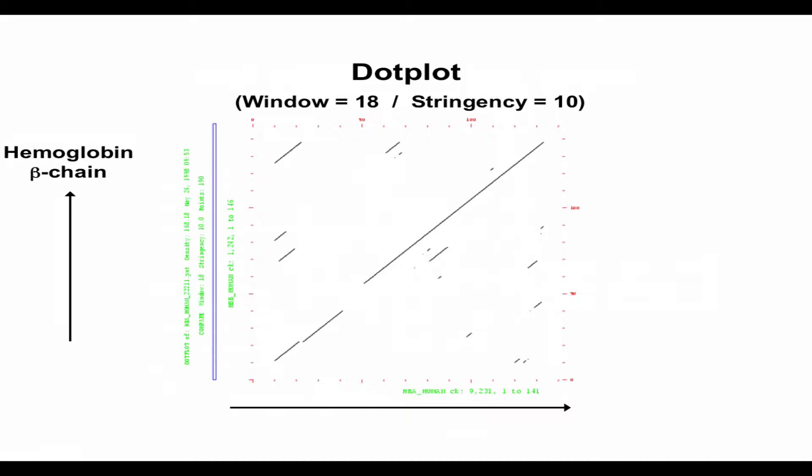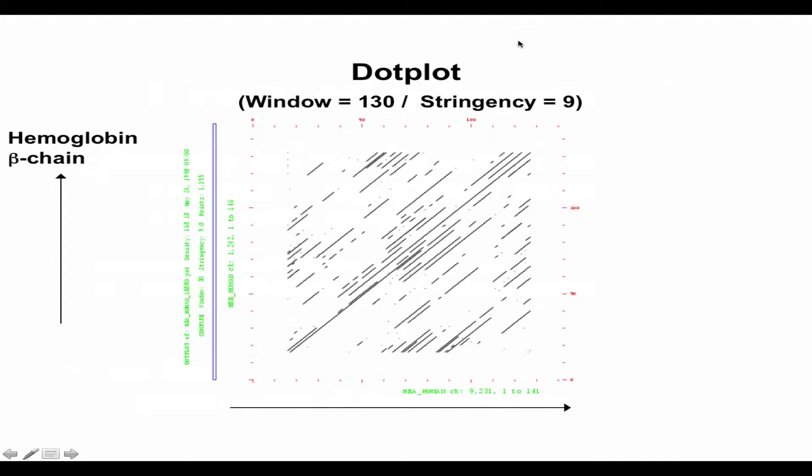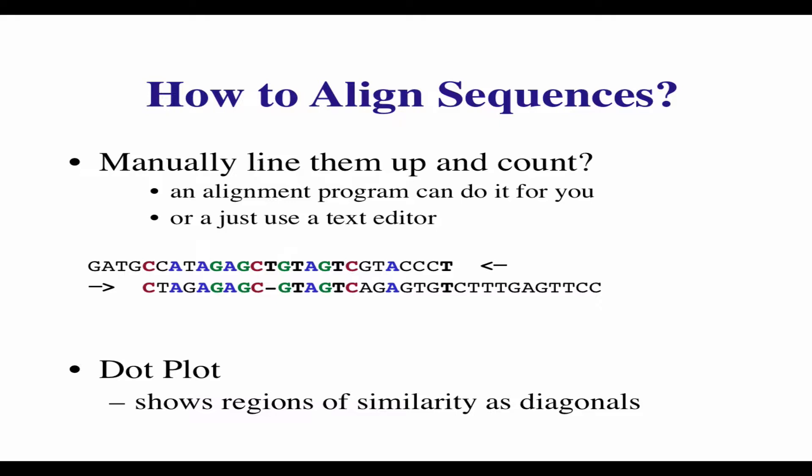Here's a case where we're matching hemoglobin with myoglobin, and there's a really strong single diagonal with window 8, stringency 10 — so that's more than 50% identity. This other example shows a really much lower amount of similarity.